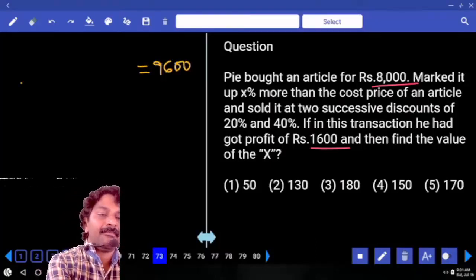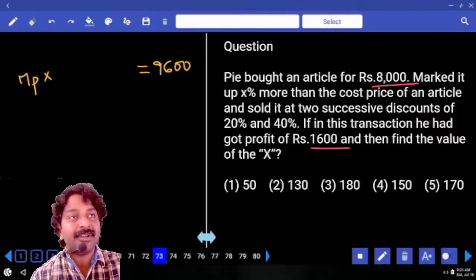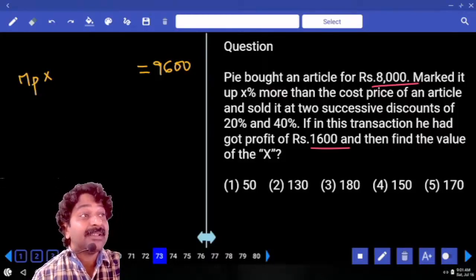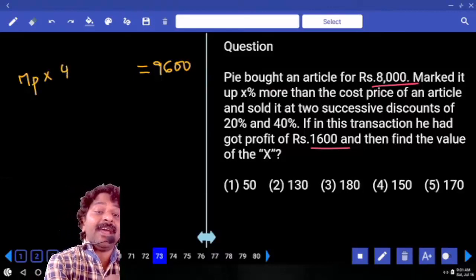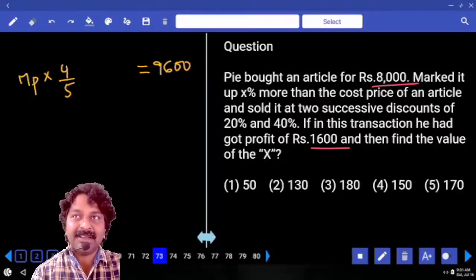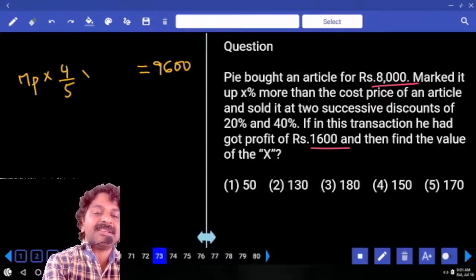Now we have market price here. What is the first discount offered? Then you will sell the item at what price? 80 percent can be written as 4 by 5. And the second discount is 40 percent, then selling price becomes 60 percent, which is 3 by 5.